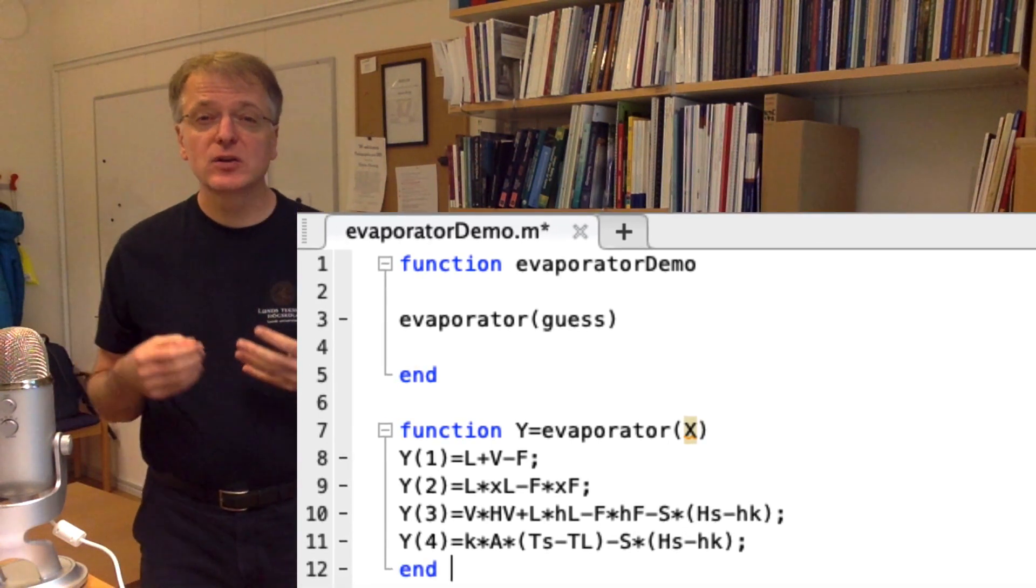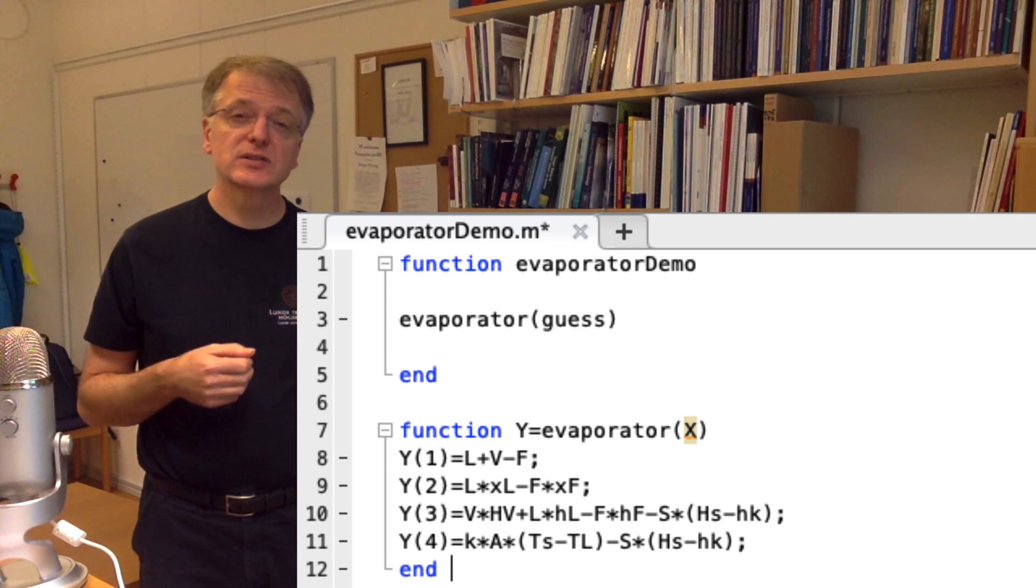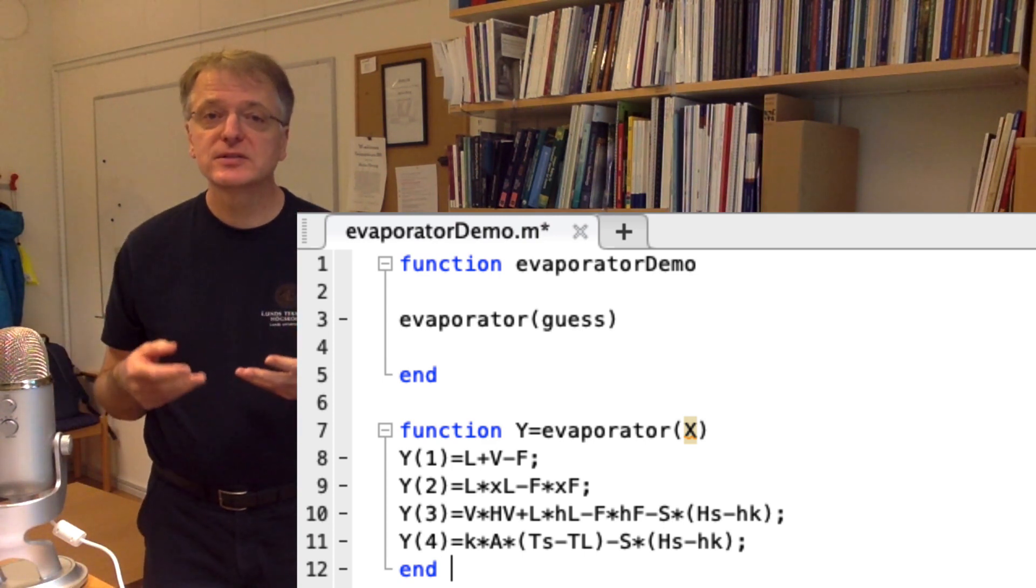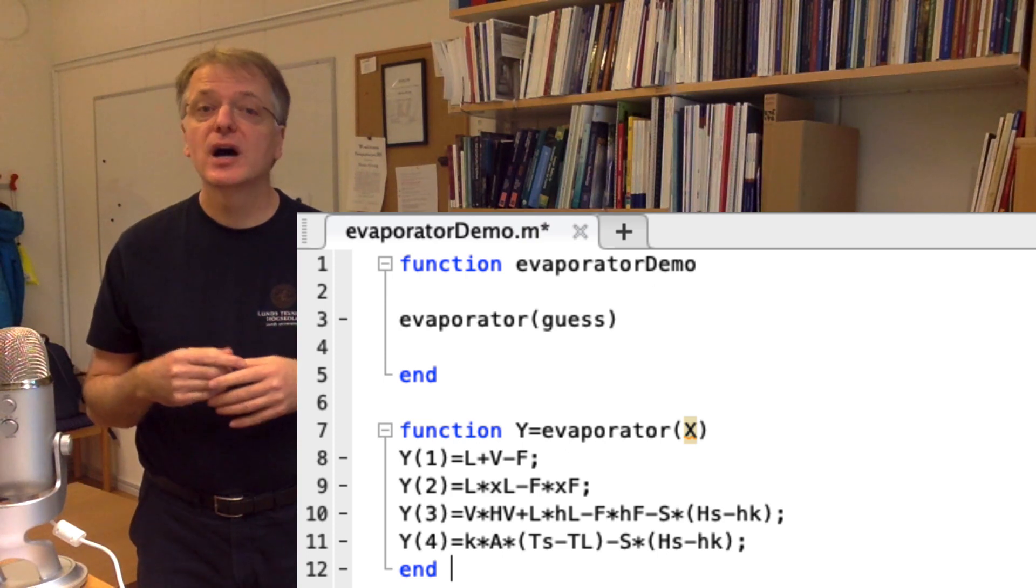Our function evaporator takes an argument X that contains our guesses of the unknown. The call of the function evaporator must thus give one argument, our guesses.